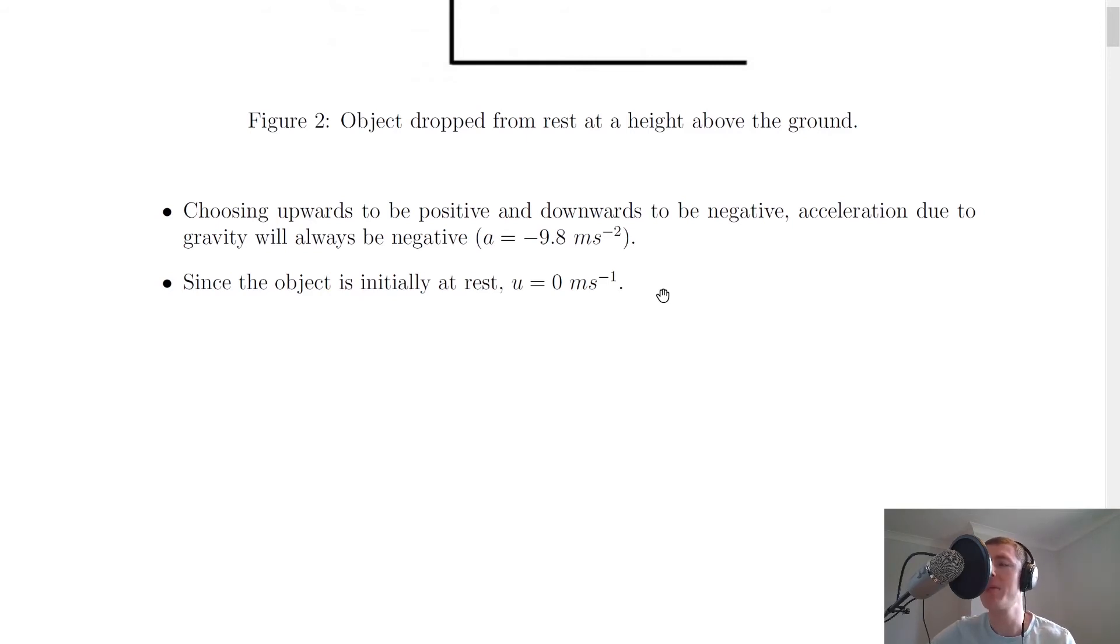So because we're only thinking about vertical motion here, this is your initial vertical velocity which will always be 0 meters per second. And as we've said, that's because the object is always starting at rest.